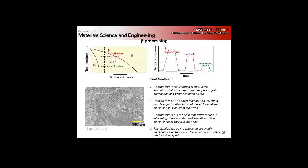Then we heat back up into the two-phase region to give an alpha plus beta anneal, sometimes called an alpha plus beta hold. That lets some of the Widmanstätten dissolve. We get nucleation of alpha ribs through the rest of the structure, and those alpha ribs thicken.